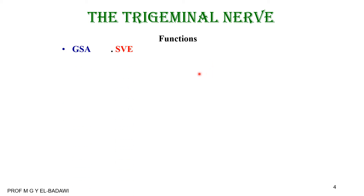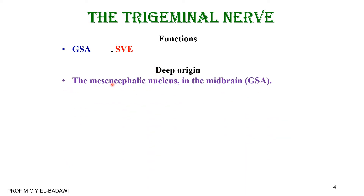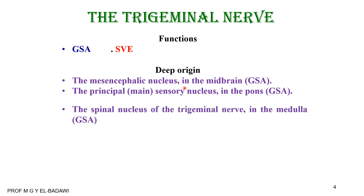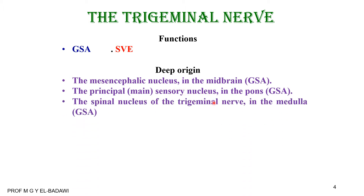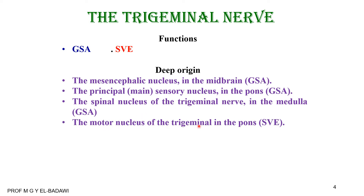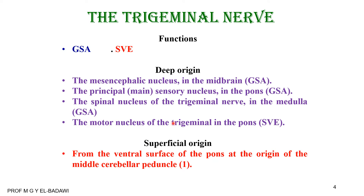To summarize: functions are general somatic afferent and special visceral efferent. Deep origin from the mesencephalic nucleus in the midbrain, the principal sensory nucleus in the pons, the spinal nucleus of the trigeminal in the medulla, and the motor nucleus of the trigeminal in the pons. Superficial origin from the ventral aspect of the pons at the origin of the middle cerebellar peduncle.